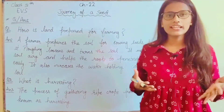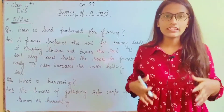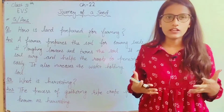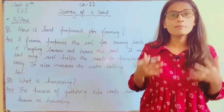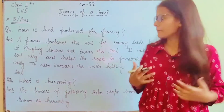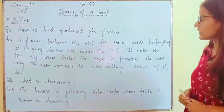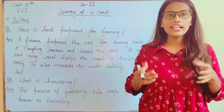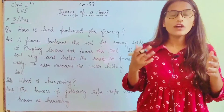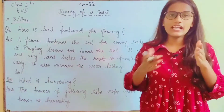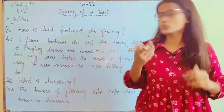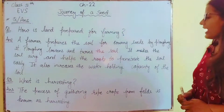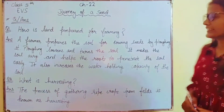Seeds ko sow karne ke liye pahle soil ko prepare karte hai. Soil kaise prepare karte hai? Plowing karke. Plowing loosens and turns the soil. Plowing se kya hota hai? Jo soil hai wo loosen up ho jati hai, aur plow ke help se jo soil hai wo turn ho jati hai. It makes the soil airy and helps the roots to penetrate the soil.